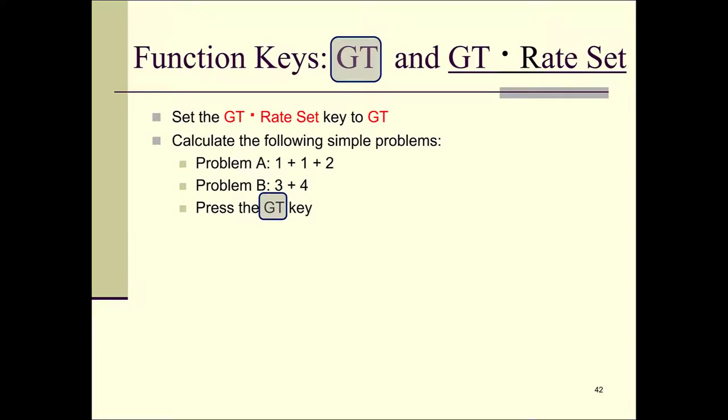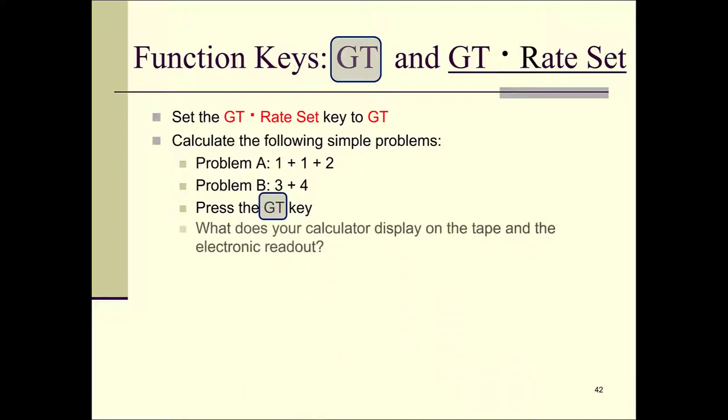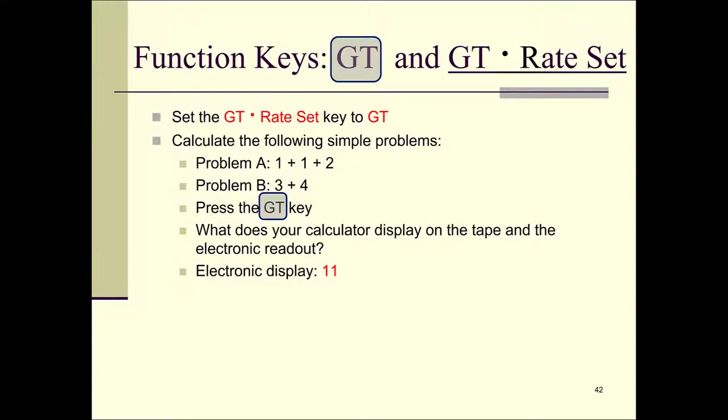We're going to do a really simple example. We've got two super simple addition problems: problem A and problem B. These are two separate problems, so make sure you hit asterisk in between to get two different answers. Do problem A: one plus one plus two, then hit asterisk to get your total. Then do three plus four and hit asterisk to get your total, then press the GT key. The electronic readout should display the grand total of those two problems, which is eleven.